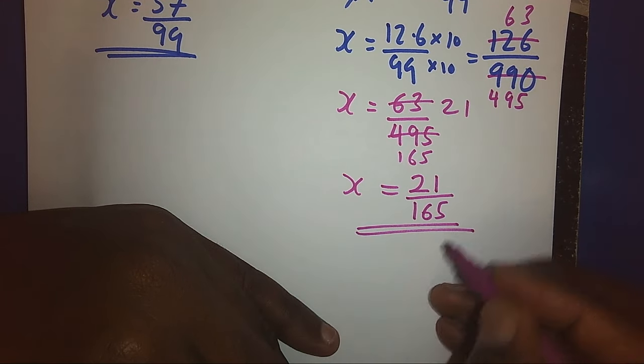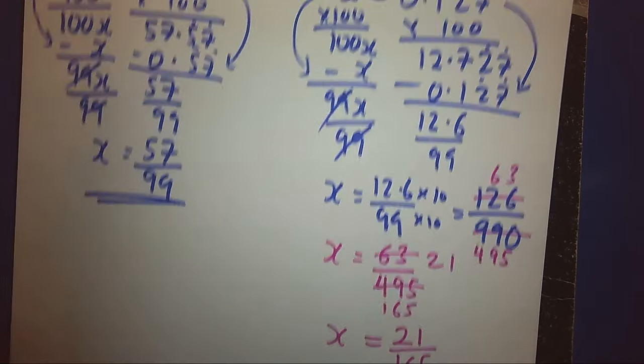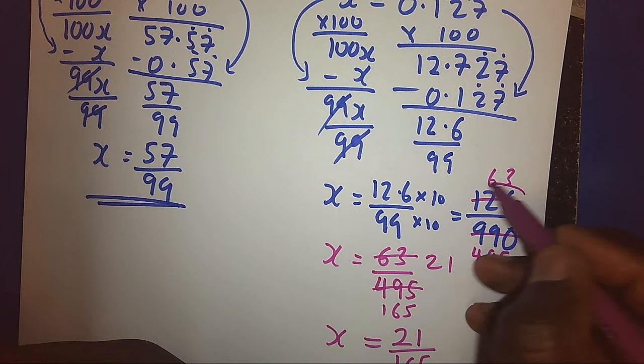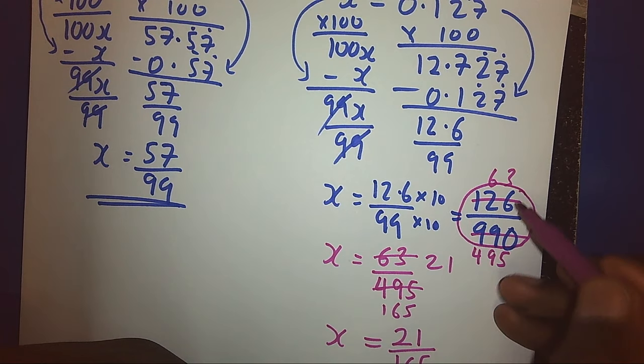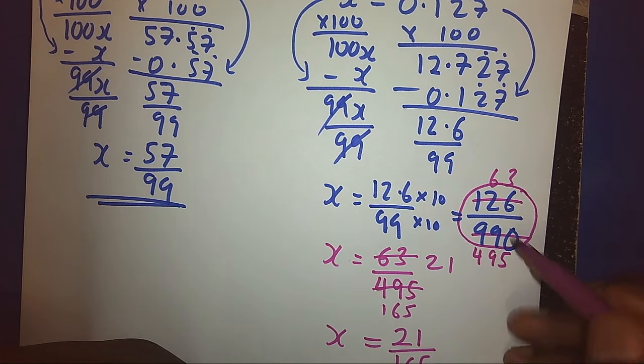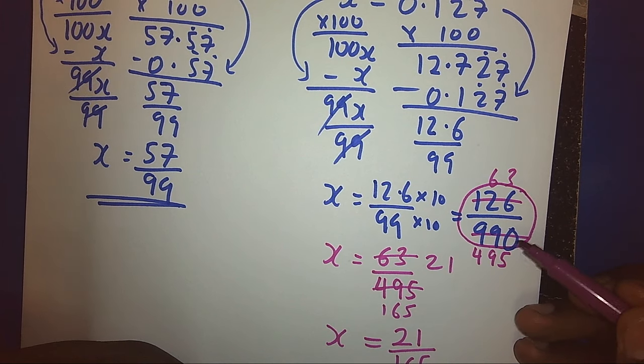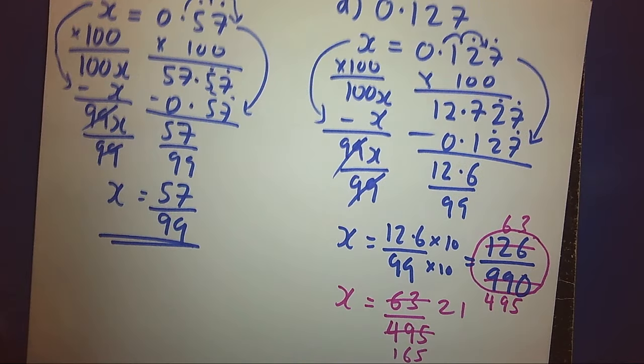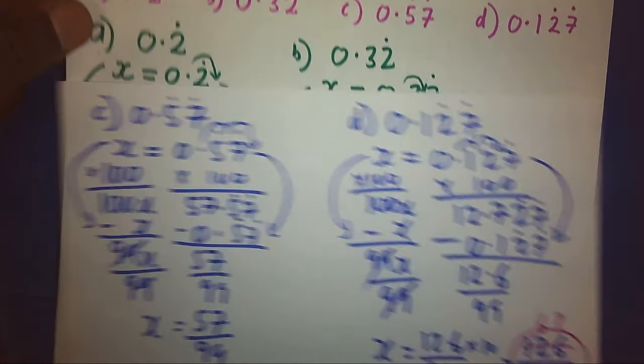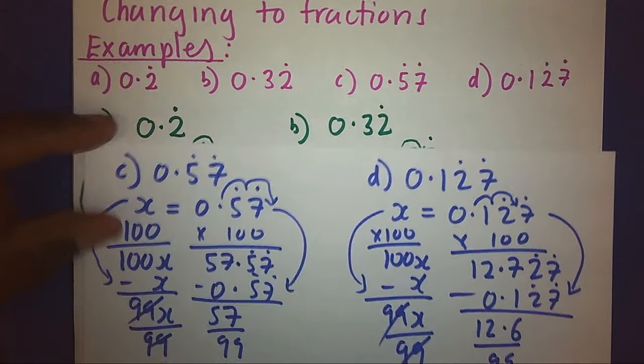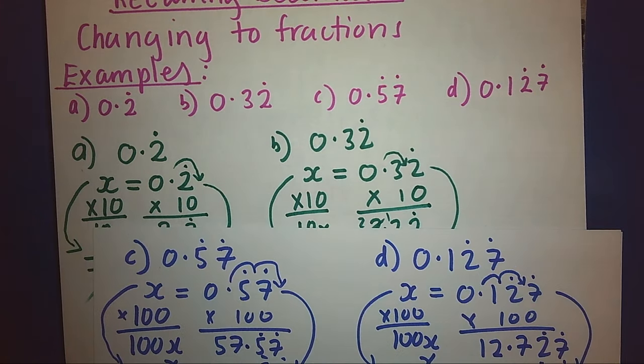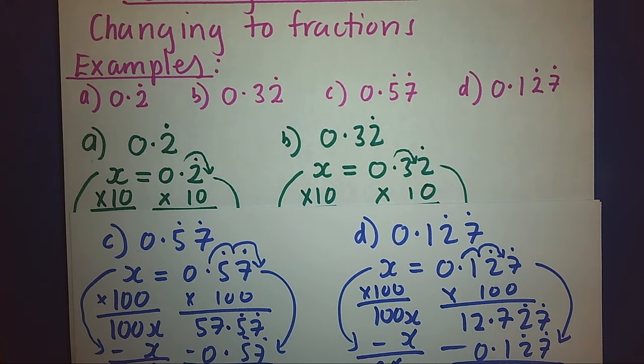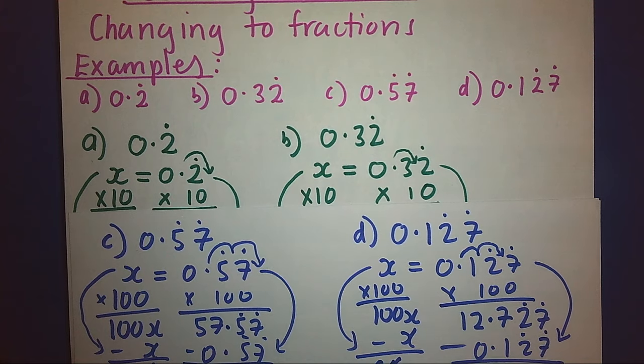This is after simplifying completely. Remember, just after multiplying by 10, up and down, we get our answer. But we are always advised to make your answer in the simplest form. That's why we go ahead to simplify until the end. These were four examples to demonstrate to us how we change recurring decimal into fractions. Thank you for watching. My name is Mr. Ishangoma.